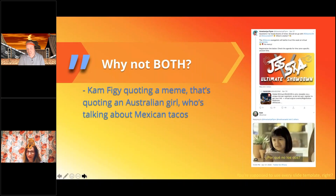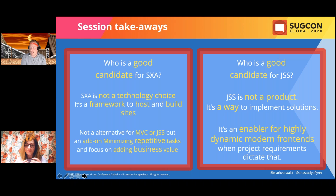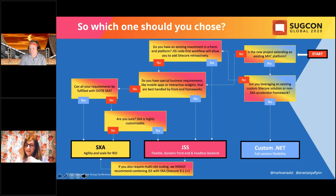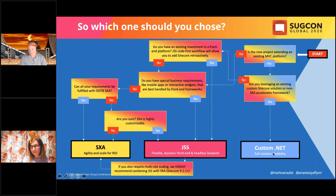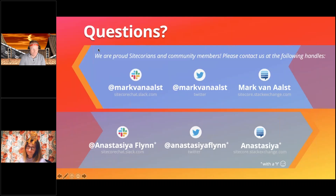To quote the meme: 'Why not both?' When making recommendations to clients, don't just compare feature sets — evaluate the business case. Very rarely is it necessary to go fully custom. Unless they're already on an MVC platform or leveraging a custom accelerator, most clients should be going JSS with SXA, or SXA. Consider the business needs and choose accordingly.